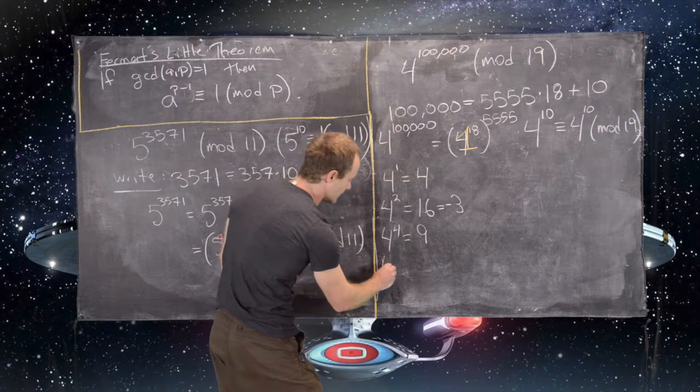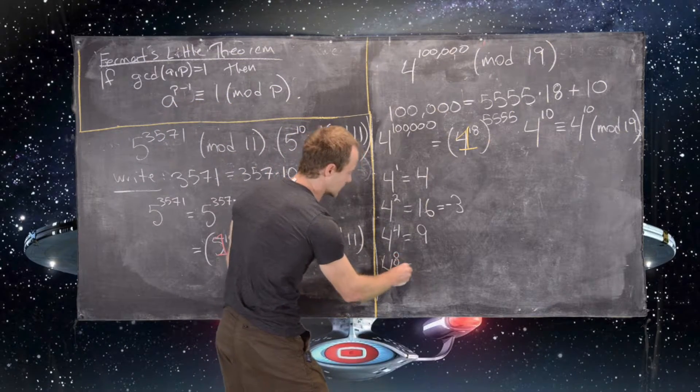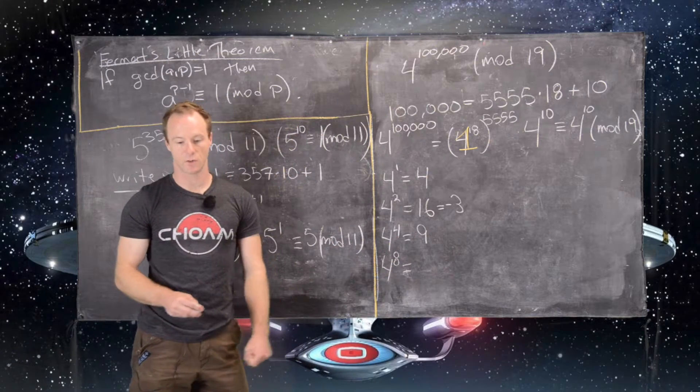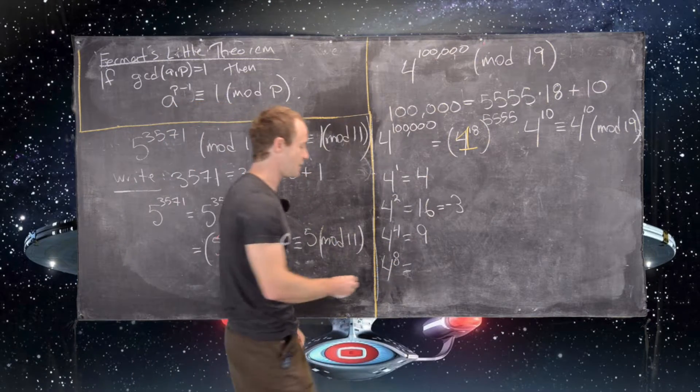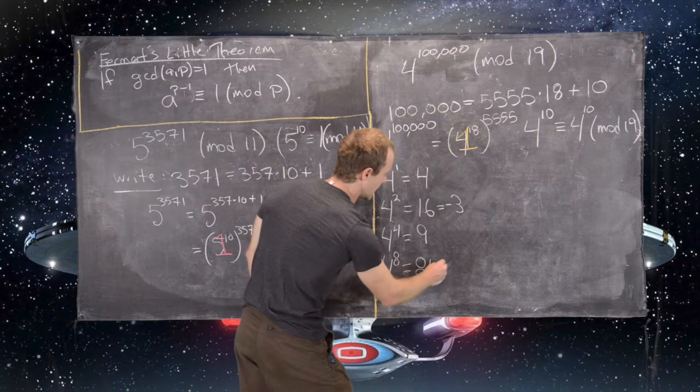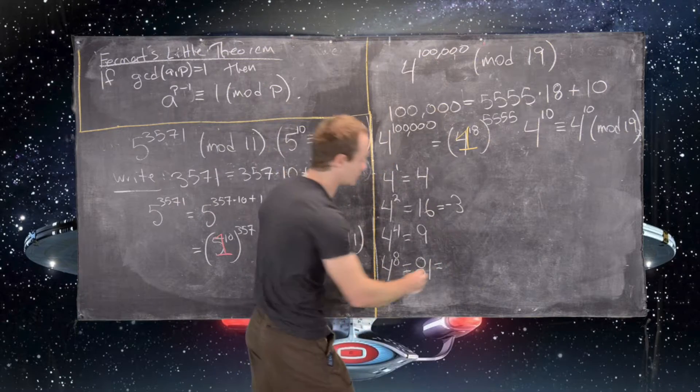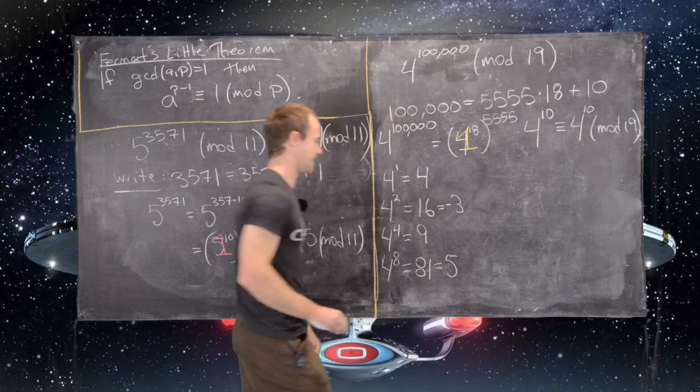And then finally, 4 to the 8th power will be equal to 9 squared, which is equal to 81 mod 19, which is equal to 5 mod 19.